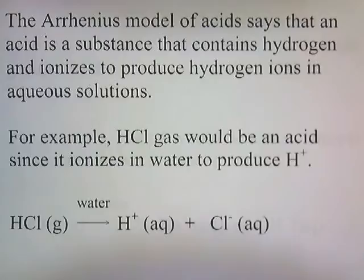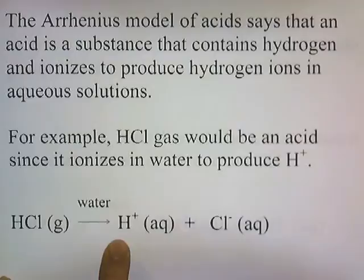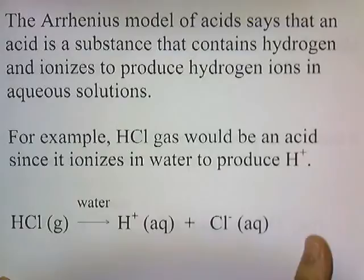The Arrhenius model of acids states that an acid is a substance that contains hydrogen and ionizes to produce hydrogen ions in aqueous solution. For example, HCl gas is an acid since it ionizes in water to produce H+ and Cl-. Since HCl produces H+ when placed in water, that makes it an acid.